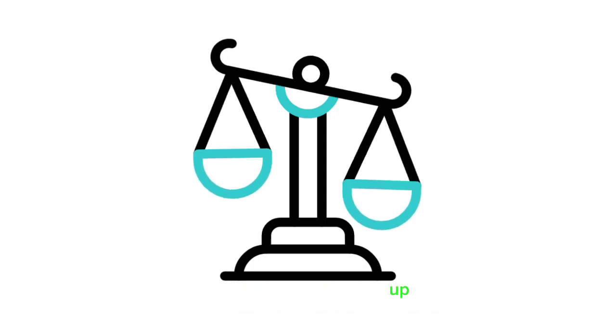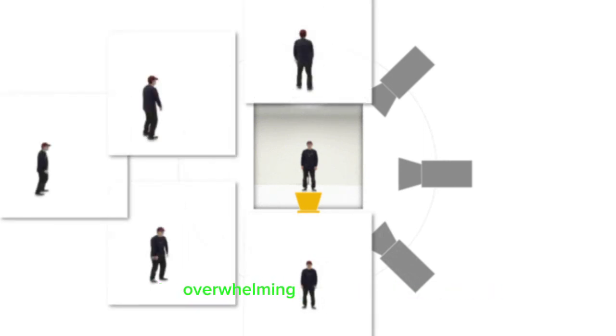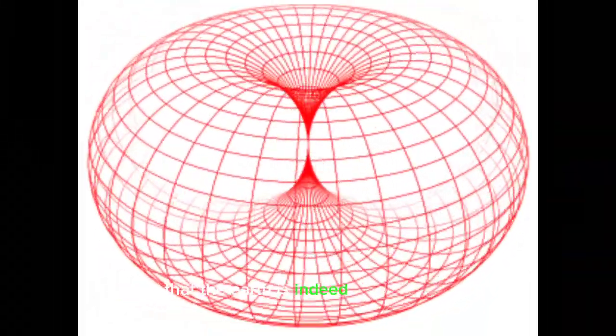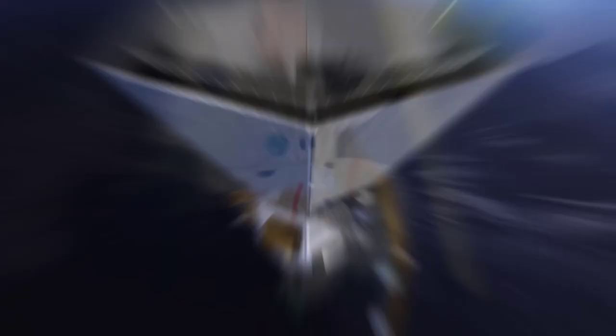Before we wrap things up, it's crucial to touch on the scientific consensus. The overwhelming majority of scientists, space agencies, and experts agree that the Earth is indeed an oblate spheroid and space missions are real.